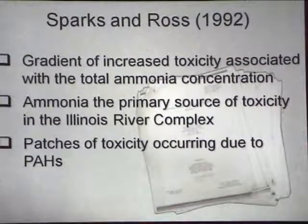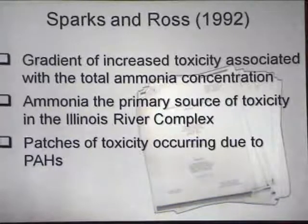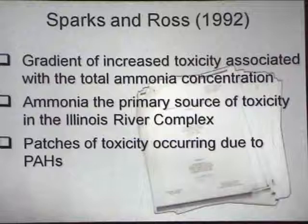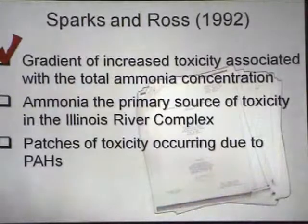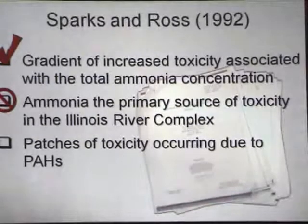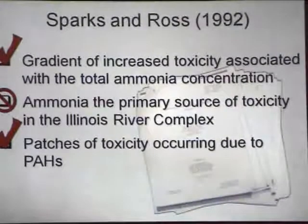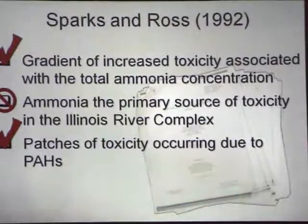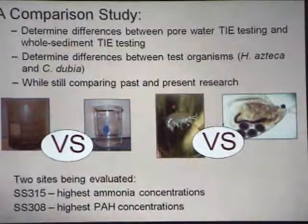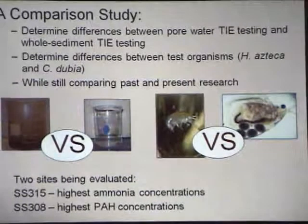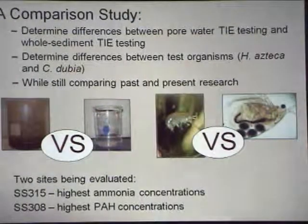Comparing back to Sparks and Ross's work from the early 1990s: they found a gradient of increased toxicity associated with total ammonia concentrations using a pore water approach. Our pore water concentrations did increase to levels at SS315 sufficient to cause toxicity. They identified ammonia as the primary source of toxicity, but our whole sediment TIE did not agree — ours found PAHs at high enough concentrations to cause nother toxicity. We weren't comparing apples to apples since their method centrifuged pore water out while we used a whole sediment TIE.